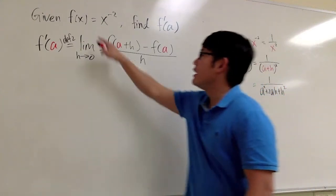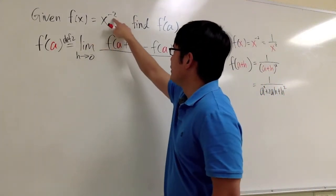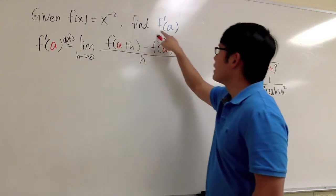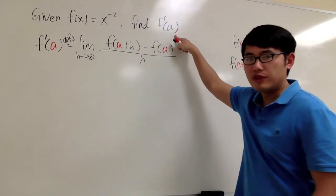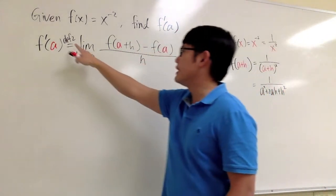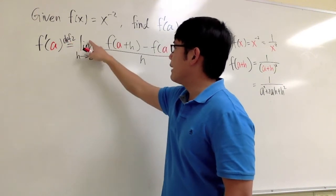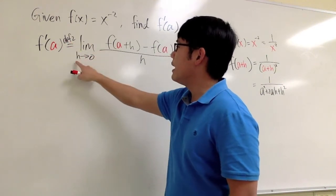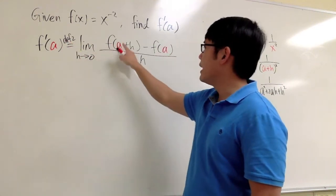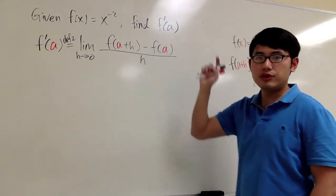Here we are given the function f of x equals x to the negative 2 power. We are going to find f prime of a by using the definition of derivative — specifically the second definition — which means we have to find the limit as h goes to 0 of f of a plus h minus f of a, all over h.